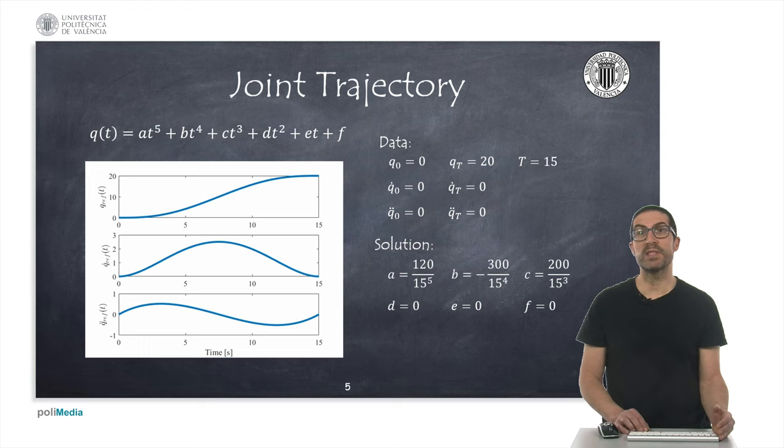Thus, given this problem statement, we can obtain the parameters of the polynomial expression as indicated, and apply the expression to compute the trajectory over time. As it can be seen in the figure, the requirements we impose to the trajectory are met.